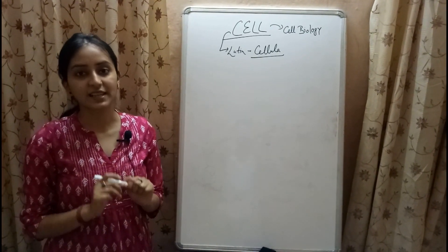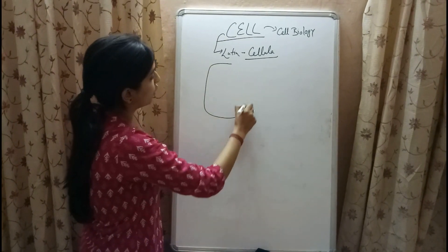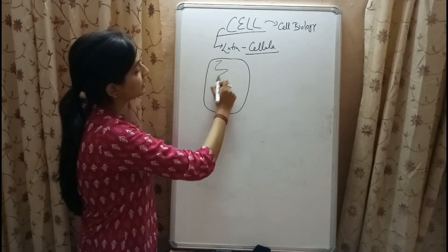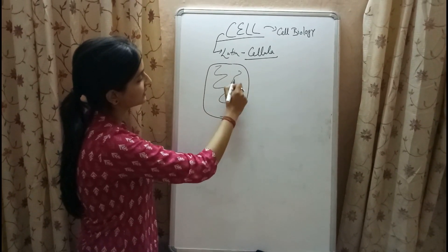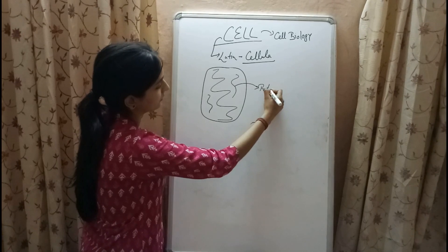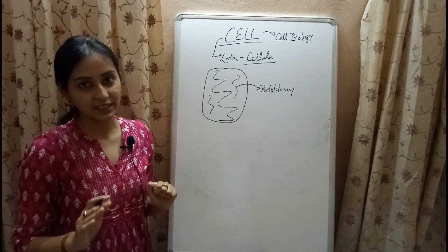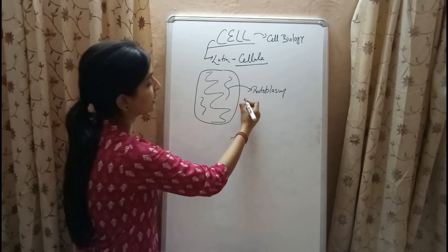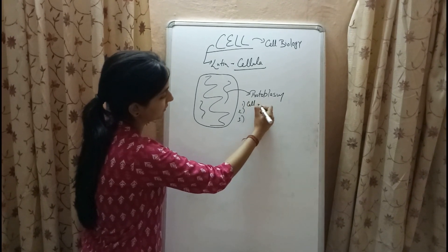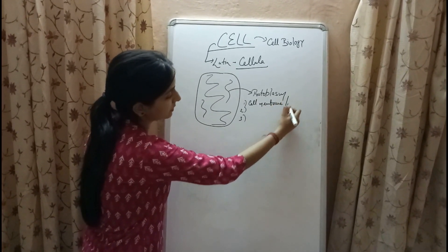The living component of the cell is known as protoplasm. There are three major parts of the cell. The first part is the cell membrane, which is also known as the plasma membrane.